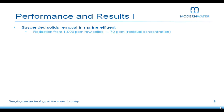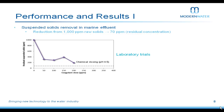Looking at results: our first trial examined suspended solids removal in marine effluent, with a raw starting concentration of 1000 ppm and a target of 70 ppm residual. We always run chemical dosing trials first. At unregulated pH, dosing up to 200 ppm of ferric chloride did not reach target. Tweaking to an optimum pH of 7 brought us close but not quite there. Running conventional EC eventually hit target, but only at a very high coagulant dose of 400 ppm.